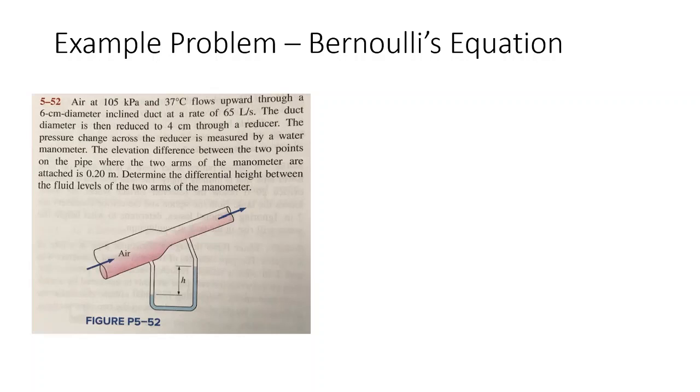We can look up the density of air for these given conditions, 105 kPa and 37 degrees Celsius. Bernoulli's equation is an equation for incompressible flow. So the assumption that we're making here is that the density of air is constant throughout, which is reasonable for these conditions.